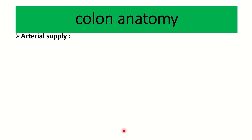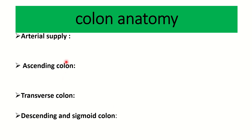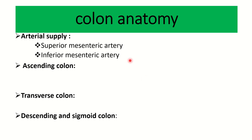Now let's look at the arterial supply of the colon. The different parts are the ascending colon, transverse colon, and descending and sigmoid colon. Almost all of the colon is supplied by the superior mesenteric artery and inferior mesenteric artery. The superior mesenteric artery and inferior mesenteric artery are branches from the abdominal aorta — they are the anterior branches. The abdominal aorta has three anterior branches: the superior mesenteric artery, the inferior mesenteric artery, and the celiac trunk.